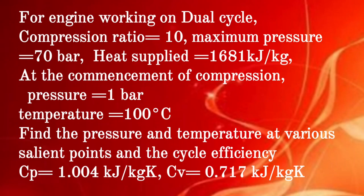For an engine working on a dual cycle, compression ratio is 10, maximum pressure is 70 bar, and heat supplied is 1681 kJ per kg. At the commencement of compression, pressure is 1 bar and temperature is 100 degree Celsius. Find the pressures and temperatures at the various salient points of the cycle and the cycle efficiency. Assume Cp = 1.004 kJ/kg·K and Cv = 0.717 kJ/kg·K for air.